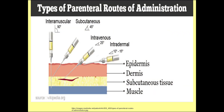This picture clearly shows the common forms of parenteral route. For intramuscular, the injection is administered at an angle of 90 degrees into the muscle directly. For subcutaneous, the injection is delivered at an angle of 45 degrees to the subcutaneous tissue. For intravenous, the drug is administered directly into the vein. For intradermal, at an angle of 10 to 15 degrees it is administered through the top layer of the skin — the epidermis.